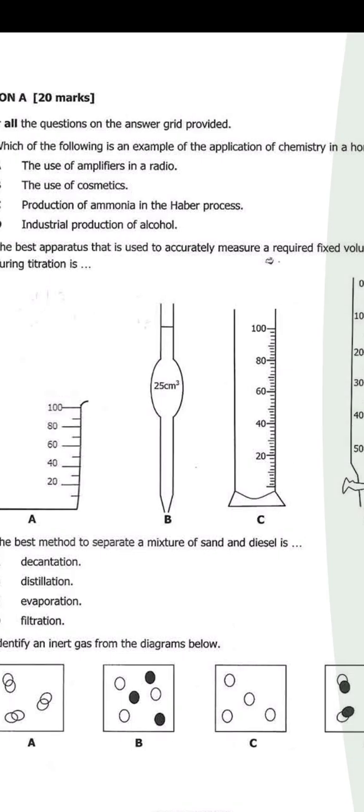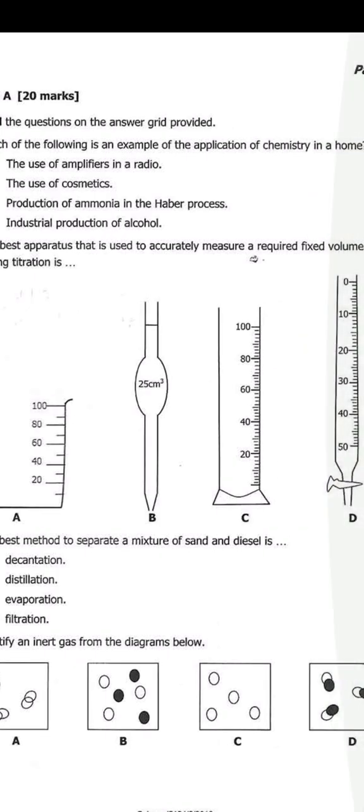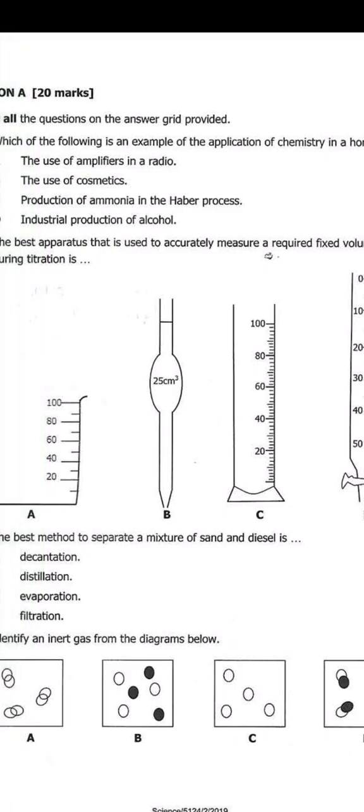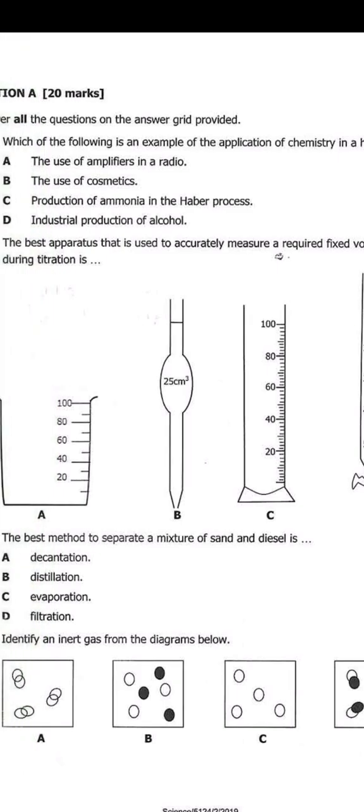Which of the following is an example of the application of chemistry in a home? So, the use of amplifier in a radio, that's physics. The use of cosmetics, let's keep that one. Production of ammonia in the Haber process, that's the industrial production of ammonia. Then, industrial production of alcohol. The bacteria said industrial, so it's not in the home. So, meaning the answer is B, the use of cosmetics.